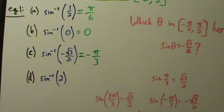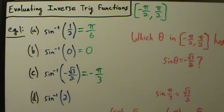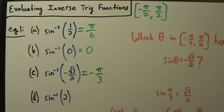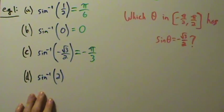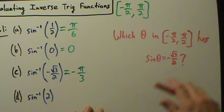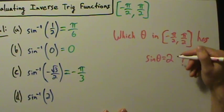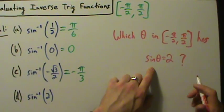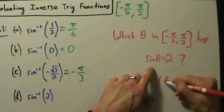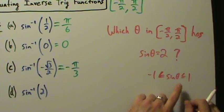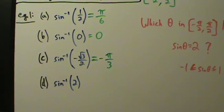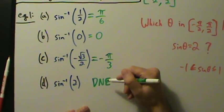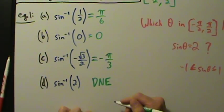For part D, inverse sine of 2. We ask: which theta in this interval has sine of theta equal to 2? Remember, the range of the sine function means negative 1 is less than or equal to sine of theta is less than or equal to 1 for any theta. So there is no theta that gives sine of theta equals 2. Therefore, inverse sine of 2 does not exist — no solution. Another way to see this: the domain of the inverse sine function is negative 1 to 1, the same as the range of the sine function. Since 2 is outside the domain, you can't evaluate the function there, so the answer is does not exist.